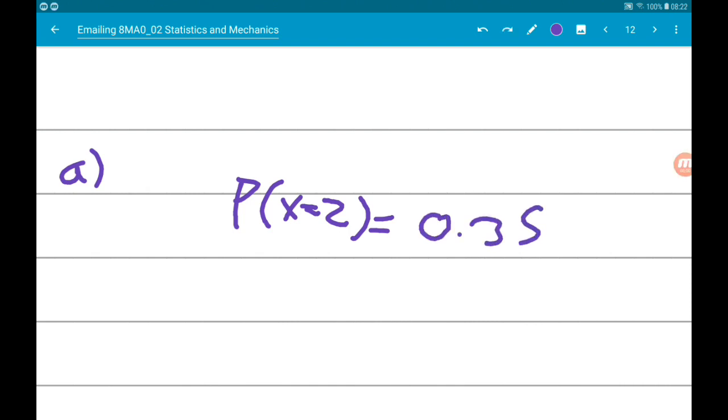So we know the probability of X equals 2 is 0.35. Now, we also know the probability that X equals 4 is 0.35.